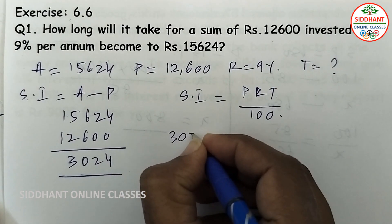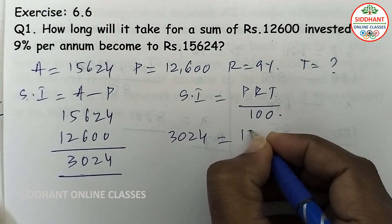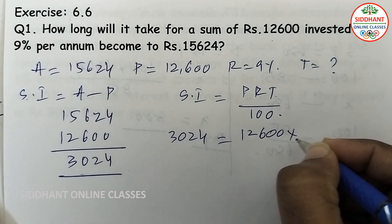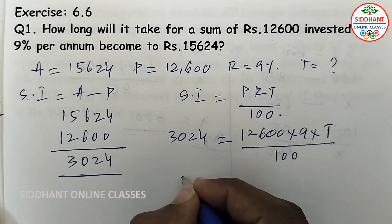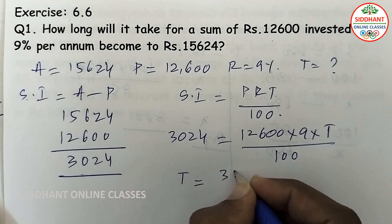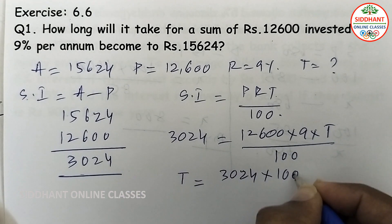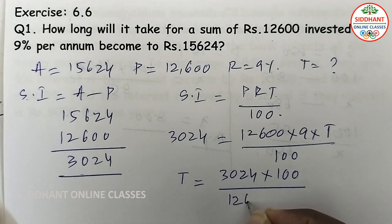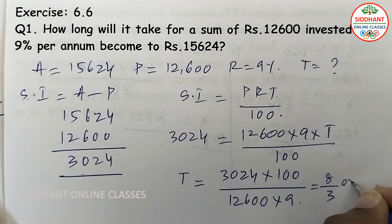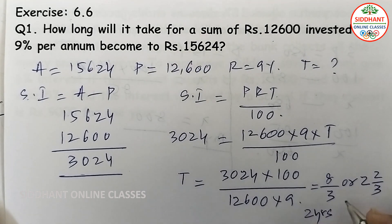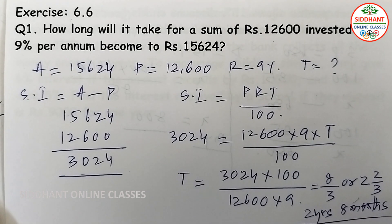So we know that simple interest is 3,024 and principal is 12,600. Substituting into the formula: T = SI × 100 ÷ (P × R) = 3,024 × 100 ÷ (12,600 × 9). After simplification, that gives us 2 years 8 months.